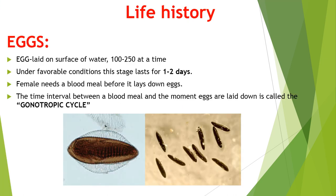Mosquitoes lay eggs on the water surface, and at a time they can lay up to 100 to 250 eggs. Some mosquitoes lay the eggs singly, and some lay them in a bunch. Under favorable conditions, this stage lasts for one to two days. The eggs are either boat-shaped with lateral floats, or cigar-shaped. Usually, the female needs a blood meal before it lays down the eggs.